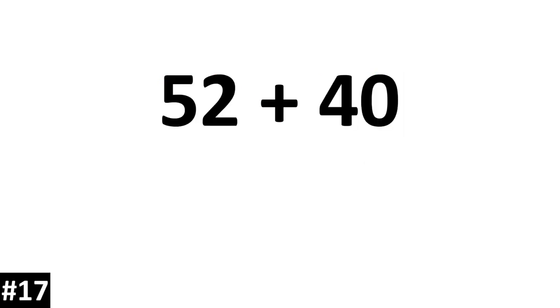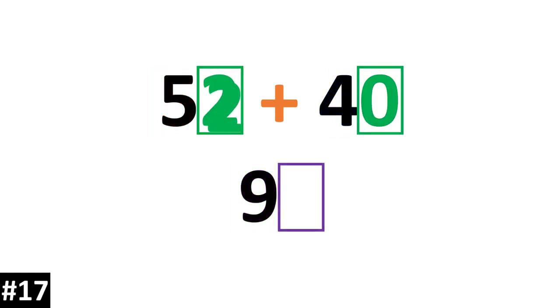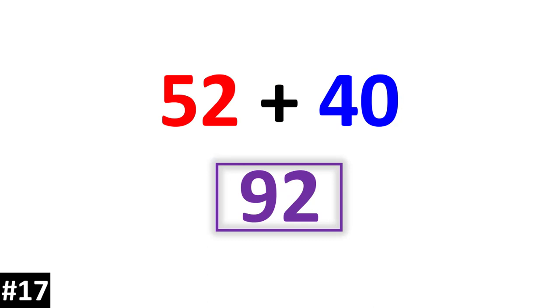52 plus 40. 52 has 5 tens, and we add 4 tens to get 9 tens. We add the ones: 2. The answer is 92.